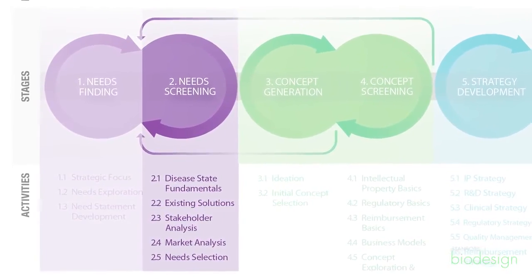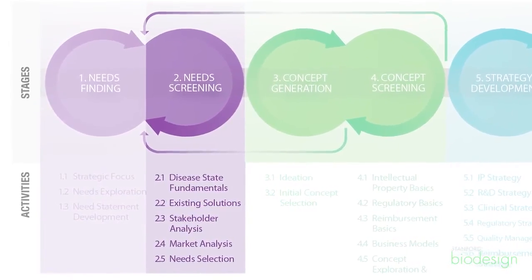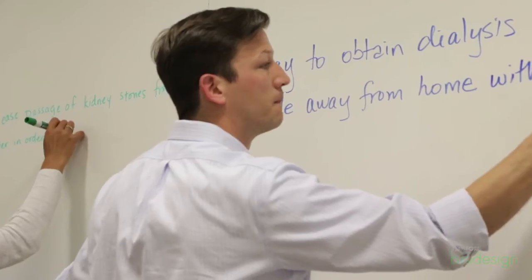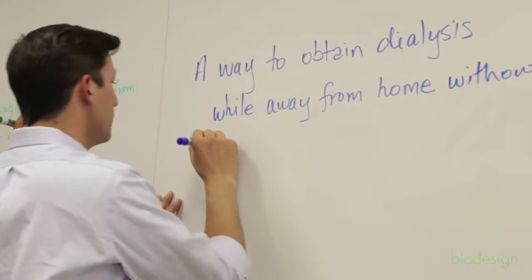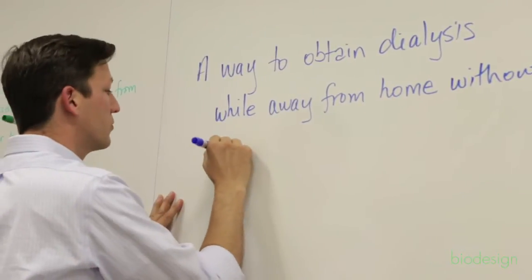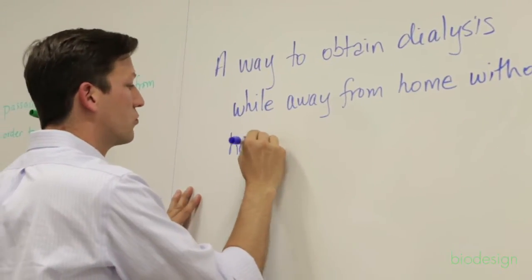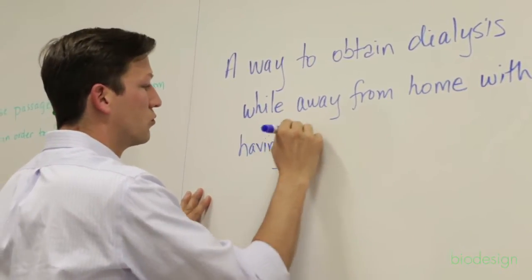Stage two of the biodesign process is a little bit about peeling the onion, so you want to kind of go layer by layer. You want to go deep enough so you can really refine the needs statements and have a very clear idea about what your goals and your outcomes are going to be.